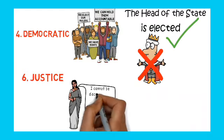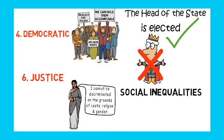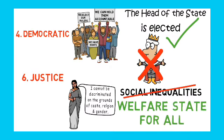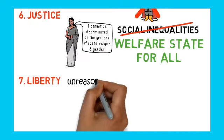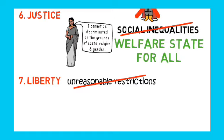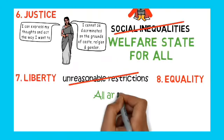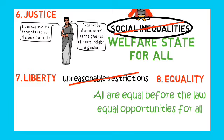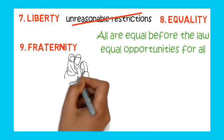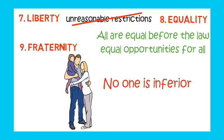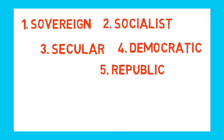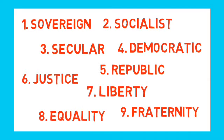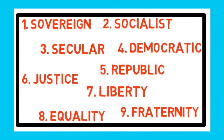Justice — everyone must get justice according to our laws. We do not follow social inequality; we follow equality. Liberty means freedom — everyone living in India has freedom to do what they want. Equality means all are equal before the law. Fraternity means brotherhood — everyone is related to each other. These are all the main nine things in the preamble.